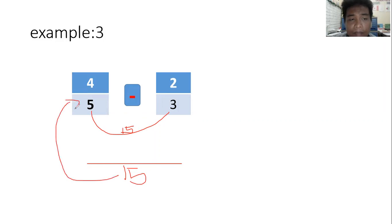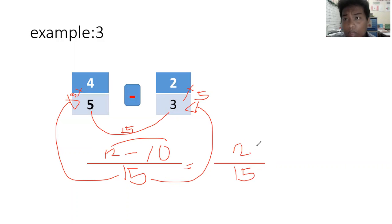Fifteen divided by five equals three, times four equals twelve. Fifteen divided by three equals five, times two equals ten. Subtract: copy the denominator, then subtract the numerator. Twelve minus ten equals two. Can we still simplify this one? No. So the final answer is two-fifteenths.